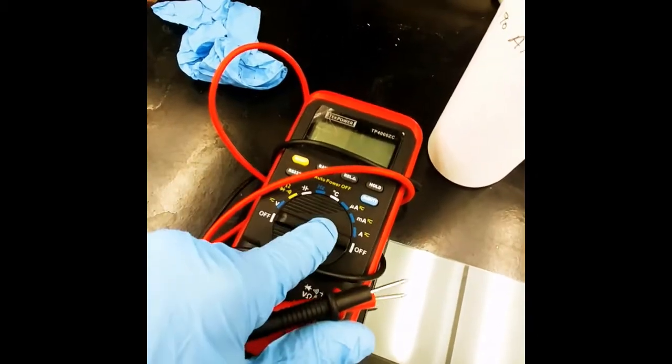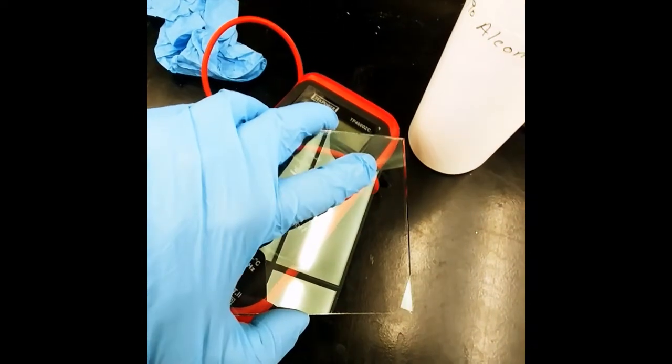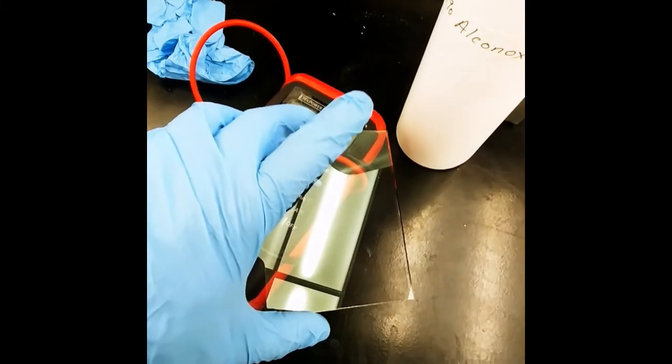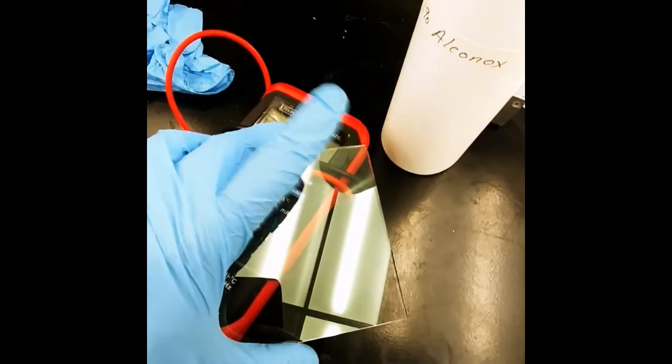Always remember to turn the conductivity probe off. So, now that we know that this is the conductive side, we can then cut on this side and create our chips.